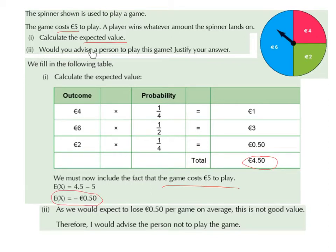Would you advise a person to play this game? As we would expect to lose 50 cent per game on average, this is not good value. Therefore, I would advise the person not to play the game. If we had ended up with a positive expected value — such as gaining 50 cent or two euro — we would advise the person to play. But since we expect to make a loss, we advise the person not to play.